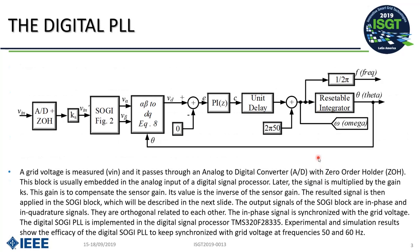This is the simplified diagram of the digital PLL. The input voltage passes through the analog-to-digital converter plus zero-order holder, and right after that we have a gain to compensate the sensor gain. Since we are measuring a grid voltage which has 180 volts peak, we need to reduce it through a sensor before feeding the signal into the DSP, and right after this conversion a sensor gain compensation is applied. At this point we have exactly the same information from the grid voltage in the digital domain. The signal then passes through the second-order generalized integrator, which is the main contribution of this paper — I will present the blocks within this diagram in the next slide.